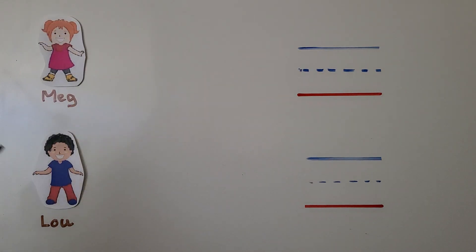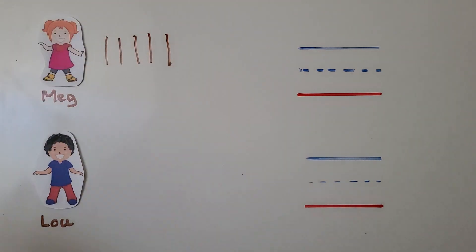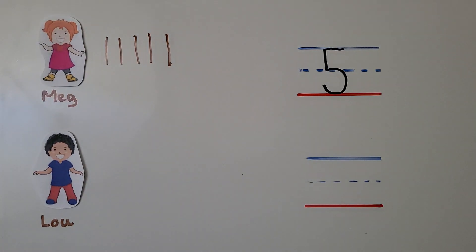Here's Meg and here's Lou. Meg has five crayons. Lou has a number of crayons less than five. How many crayons does Lou have? We can draw lines for crayons. Meg has five: one, two, three, four, five. We can write the number five. She has five crayons. Lou has a number of crayons less than five, and we need to find how many. It doesn't tell us how many less.